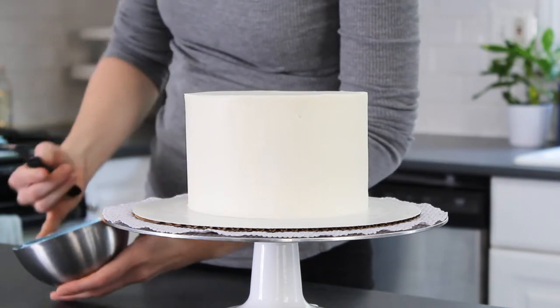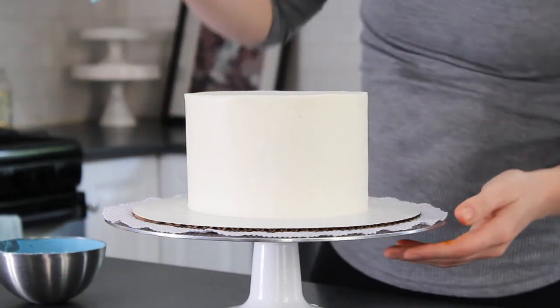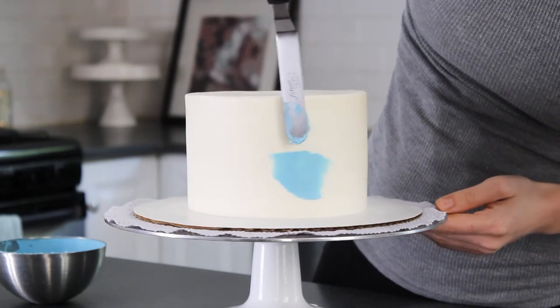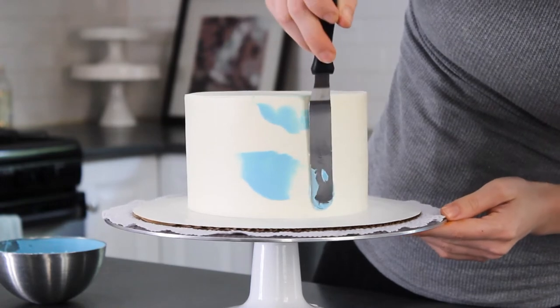I'm using a small offset spatula to gently scrape patches of blue all around the cake. It's really important to make sure your cake is chilled before this step so that you don't mess up the base layer of frosting.